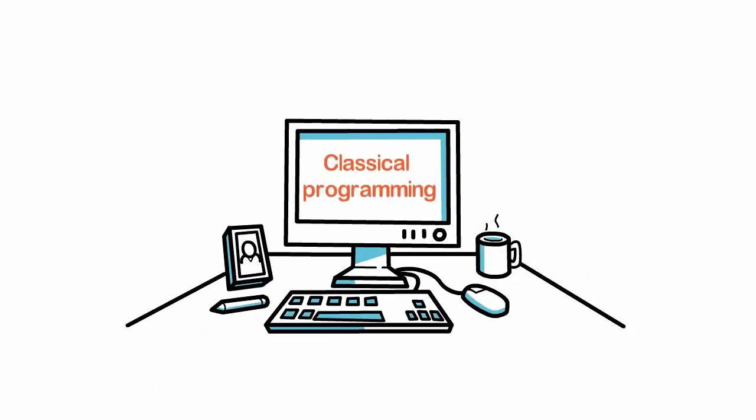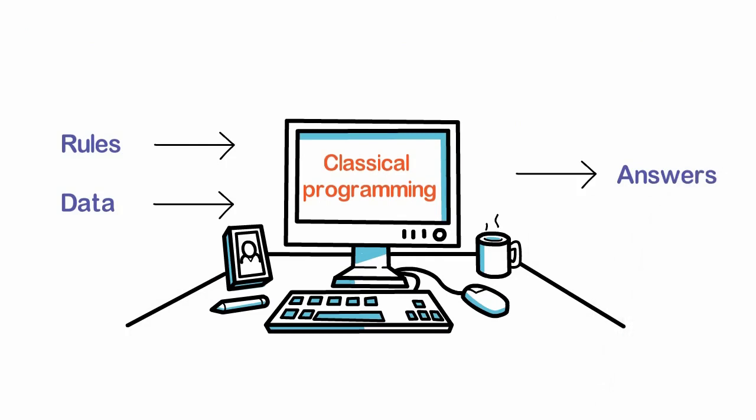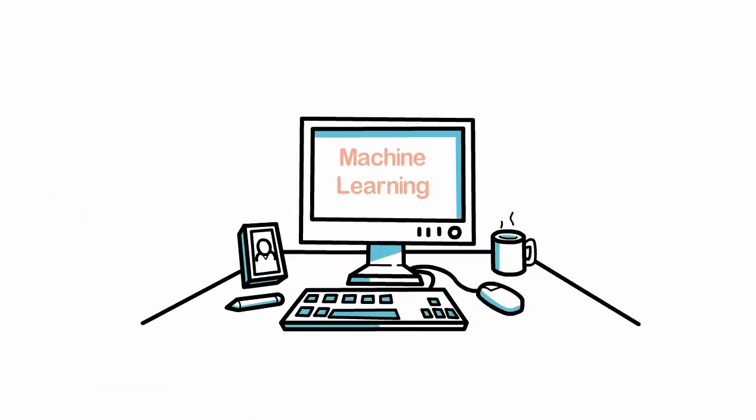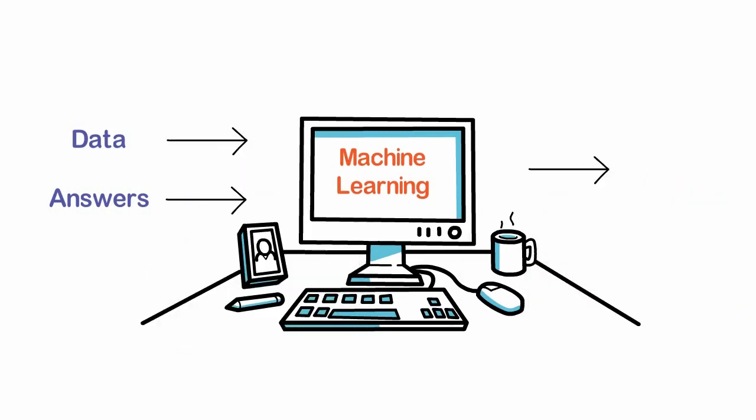In classical programming, the programmer provides the rules to the machine. Whereas in Machine Learning, the machine learns the rules on its own by going through the data.